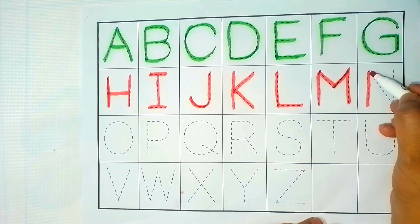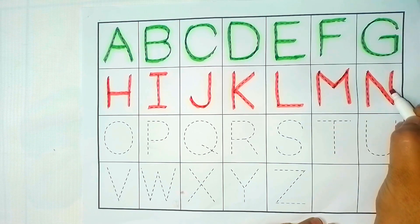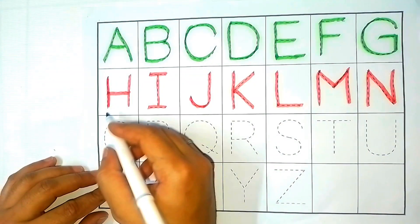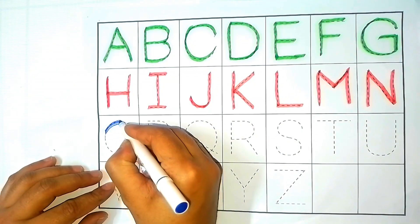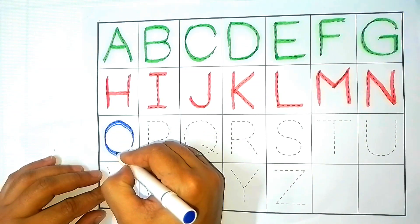N, N is for nose. Blue color. O, O is for ostrich.